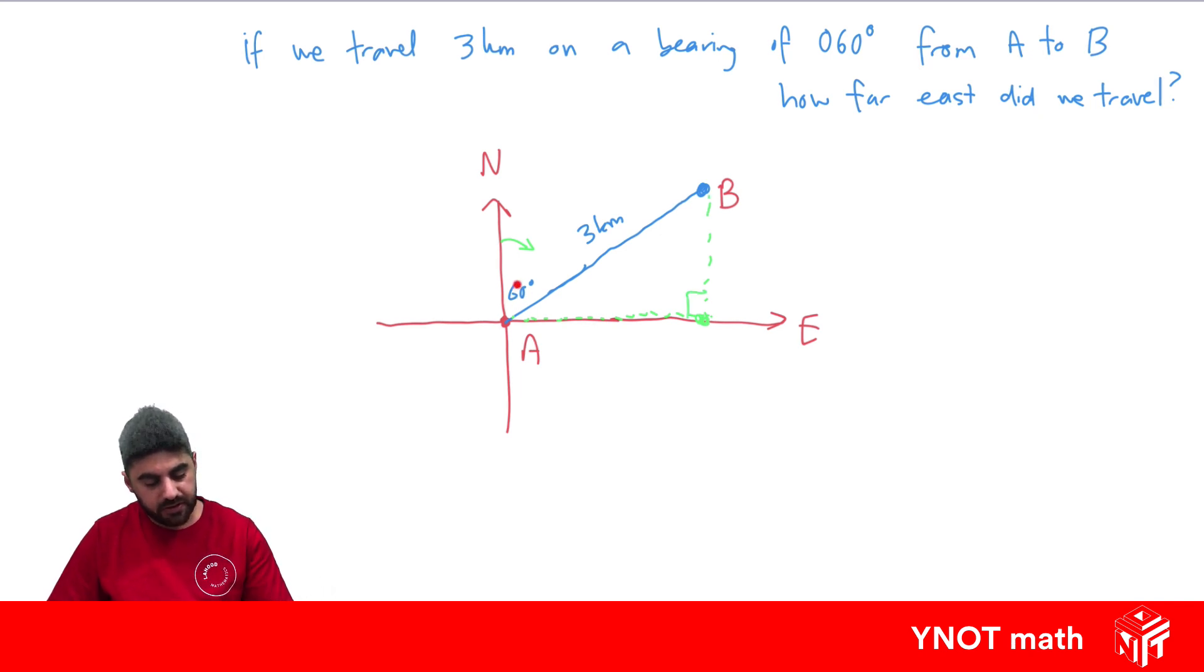Let's make a right angle triangle here. If this is 60 degrees, this angle here would be 30 degrees, because we know in between north and east makes 90 degrees in total. We want to know how far east did we travel, so let's call this x, because that's the distance we want to find in the easterly direction. Now we can use some right angled trigonometry to find this distance.